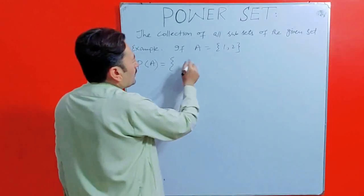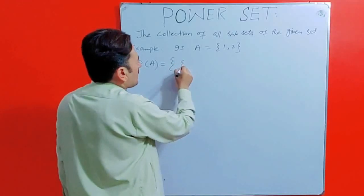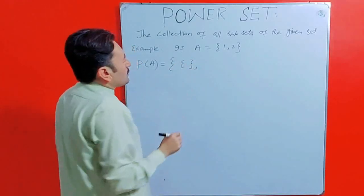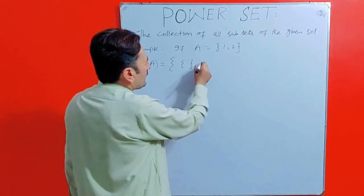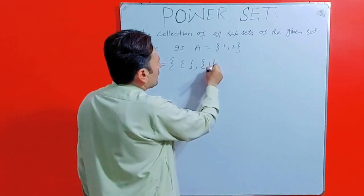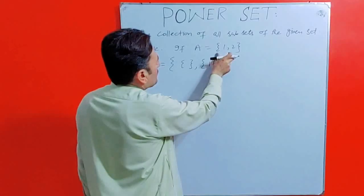So empty set is a subset of every set. So first we will start from empty set. Empty set is a subset of this set A. Then we will write {1}. Set {1} is a subset of this set {1, 2}.